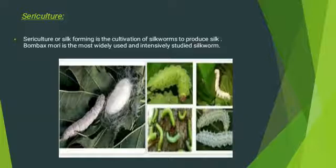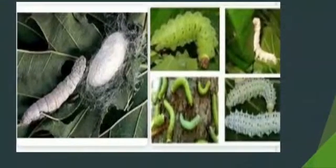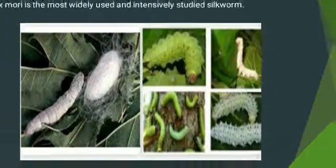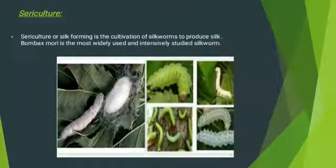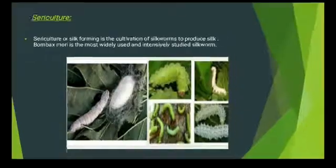The third basic concept is sericulture. Sericulture, or silk farming, is the cultivation of silkworms to produce silk. Bombyx mori is the most widely used and intensively studied silkworm, grown on mulberry leaves. The importance of sericulture includes: it provides gainful employment, supports economic development, improves the quality of life of people in rural areas, and prevents migration from rural to urban areas.